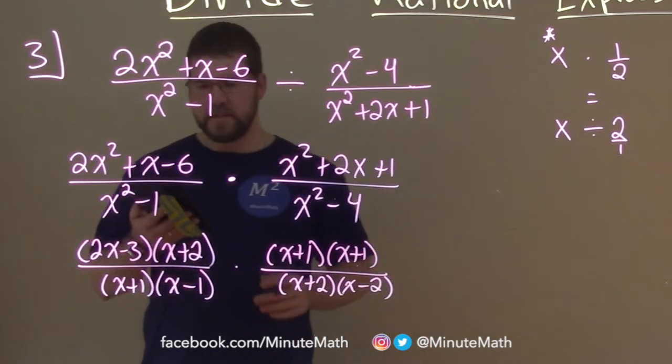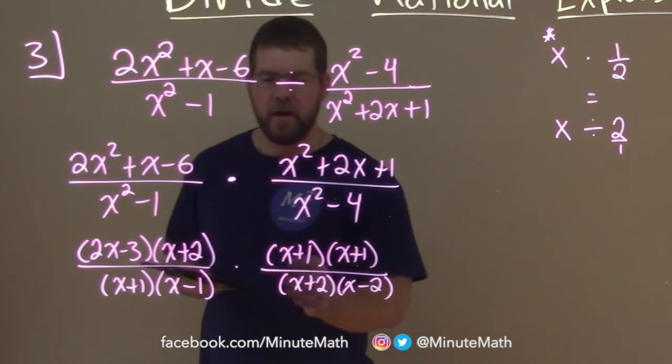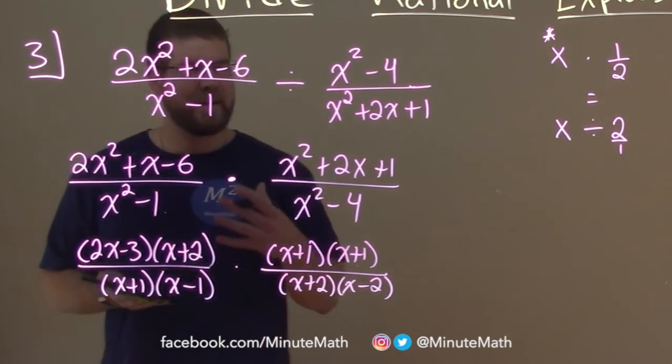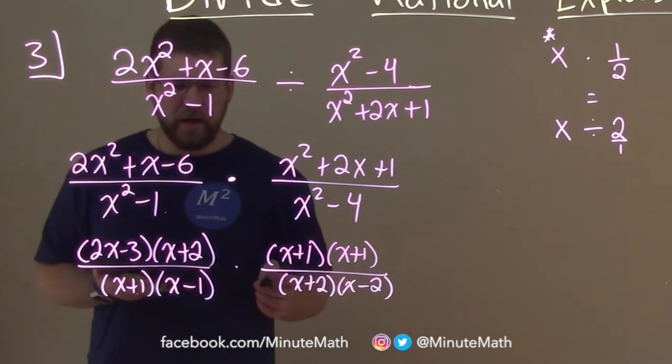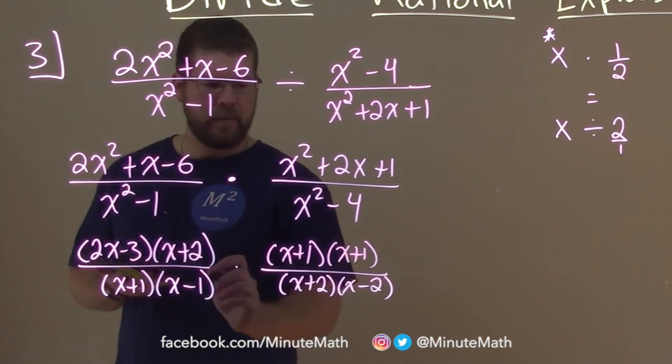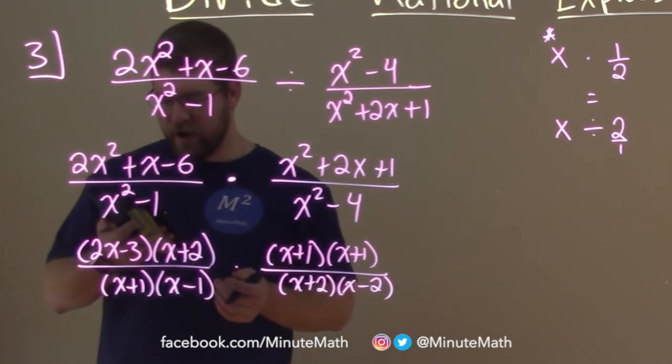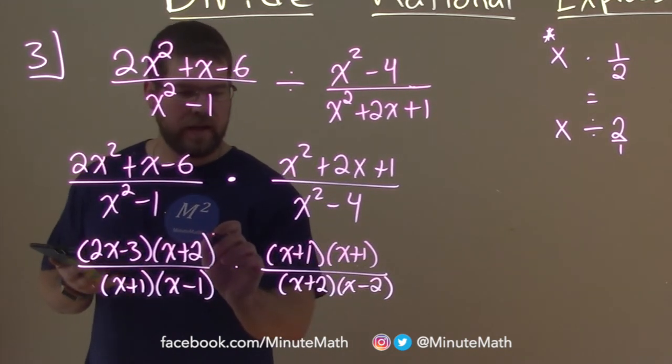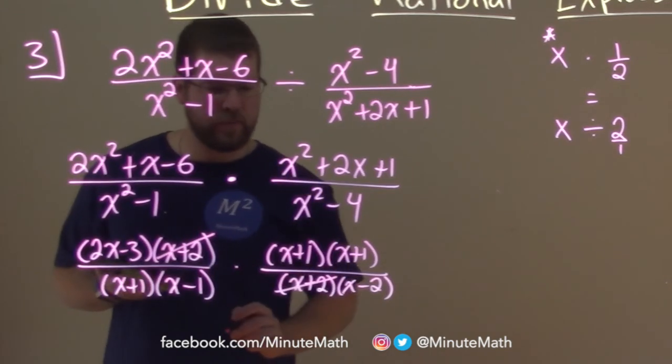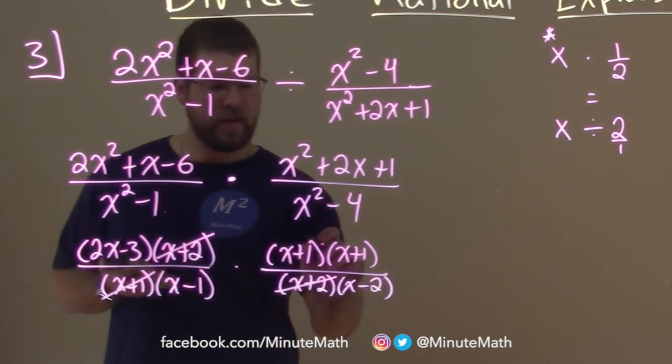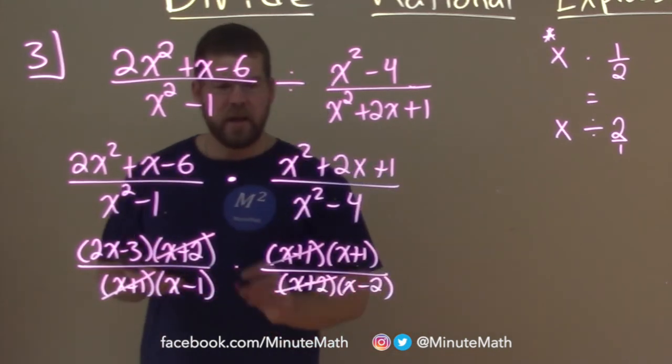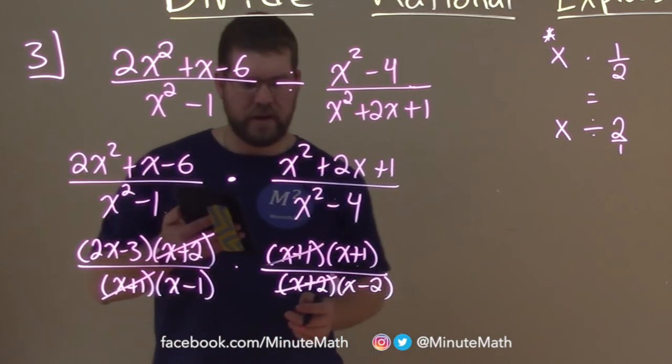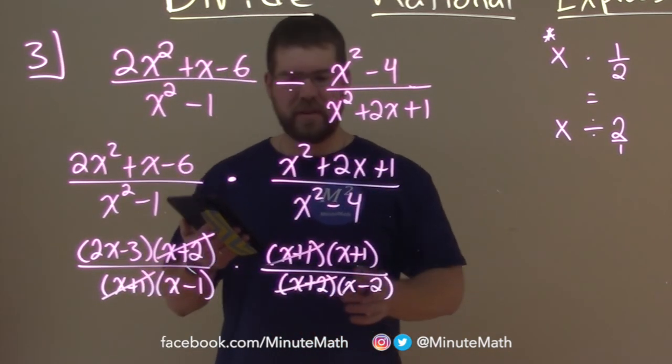So now we want to see if there's anything we can cancel out. Remember we can combine this by making it one big fraction, but I'm going to see if there's anything in the numerator and denominator that can cancel each other out. Well, I see an x plus 2 here and this x plus 2. I see an x plus 1 here and this x plus 1. Nothing else cancels out that I can see.